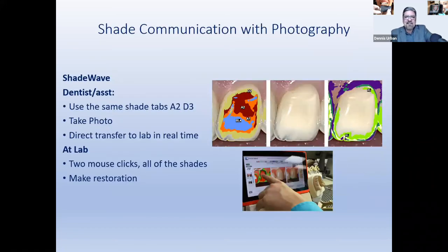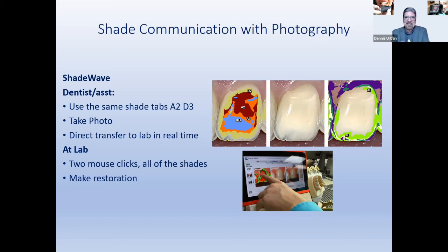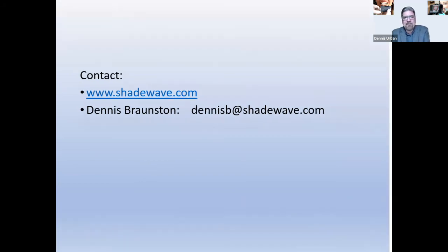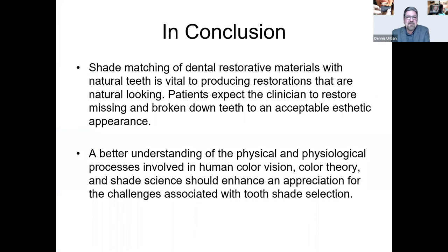The ShadeWave color map shows different shades across the restoration: D2 at the incisal, A2 cervical, A1 in the midsection, and bleaching shade toward the center — all the shades needed to build up a proper restoration. This is some of the newest technology available and has been working well at DSG. For more information, visit www.shadewave.com.